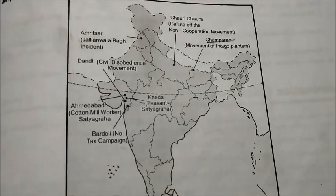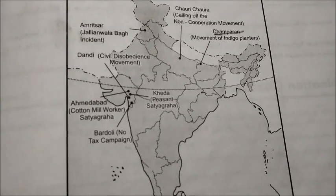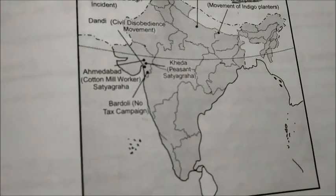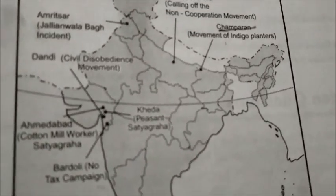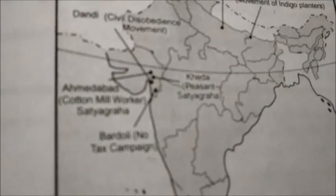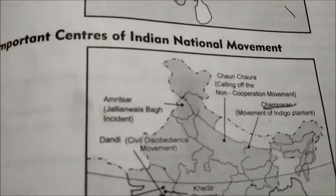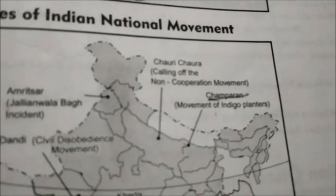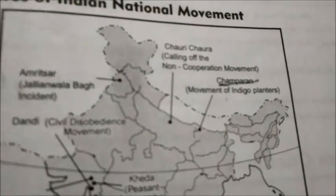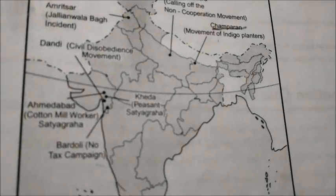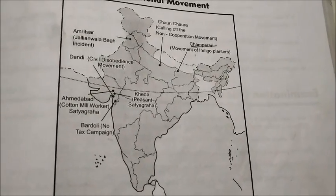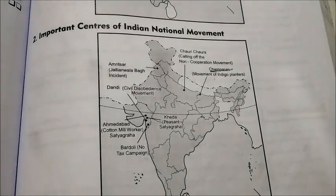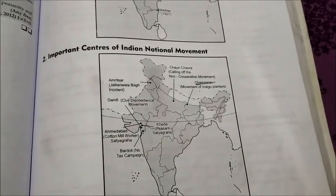Then we move to the important centers of the Indian national movement. You need to remember various campaigns conducted by Mahatma Gandhi. First is Champaran Satyagraha — the movement of indigo planters. Then the Ahmedabad and Kheda Satyagraha, both in Gujarat. Then the Bardoli campaign — a no-tax campaign — also in Gujarat. Then the Dandi March, which began the Civil Disobedience Movement. Amritsar, located in Punjab, and Chauri Chaura, where the police incident led to Mahatma Gandhi calling off the Non-Cooperation Movement.